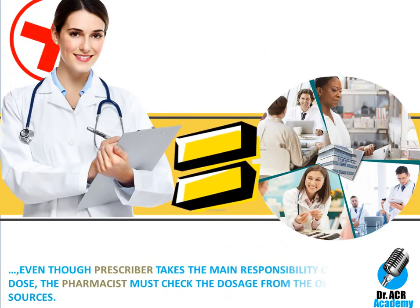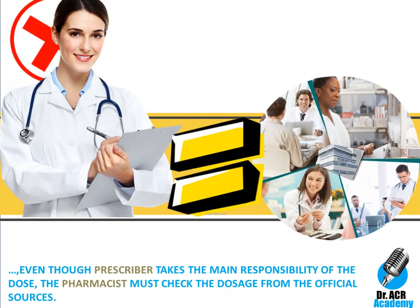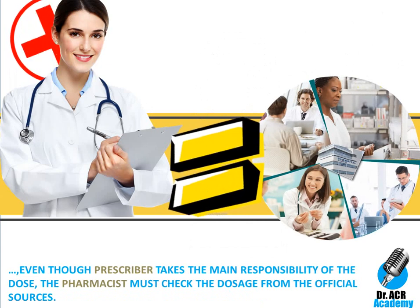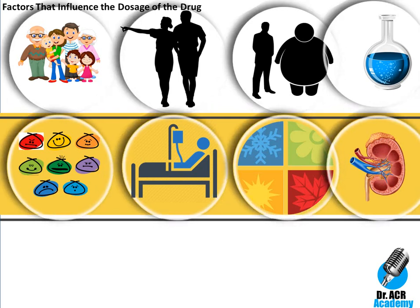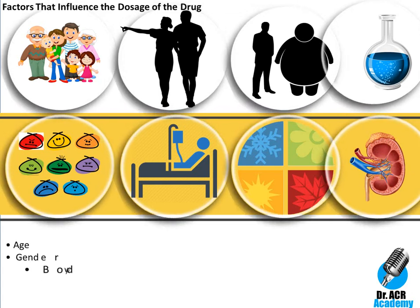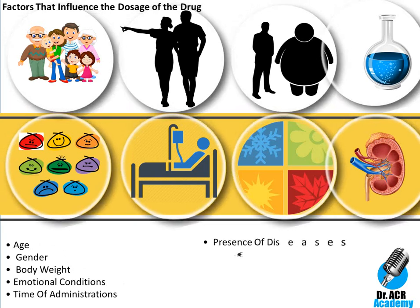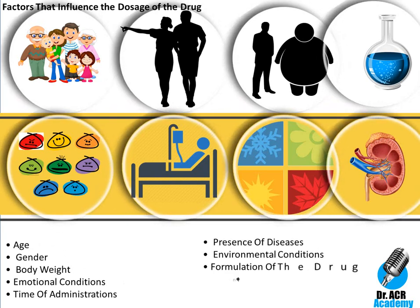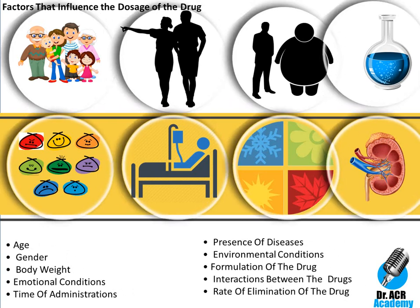Even though the prescriber takes the main responsibility of the dose, the pharmacist must check the dosage from official sources. The various factors that influence the dosage of a drug include age, gender, body weight, emotional conditions, time of administration, presence of diseases, environmental conditions, formulation of the drug, interactions between drugs, and rate of elimination of the drug from the body.